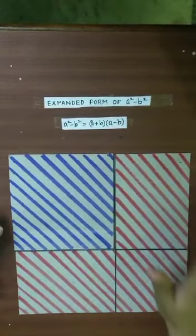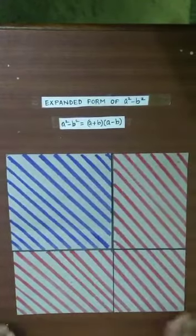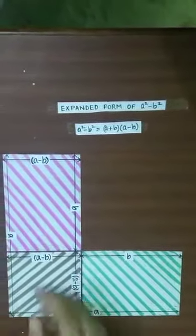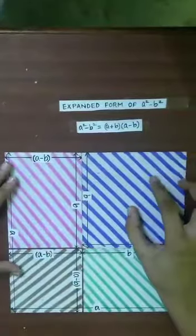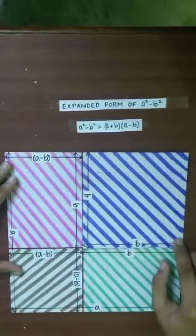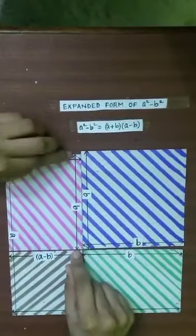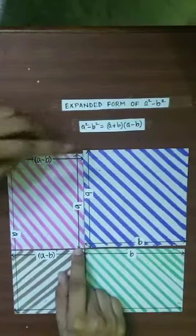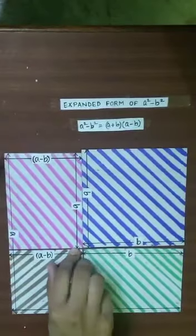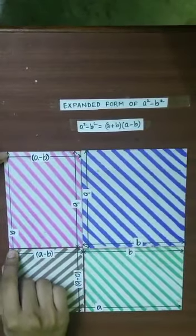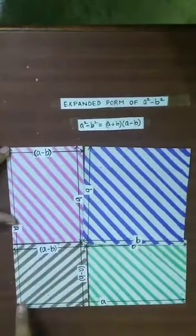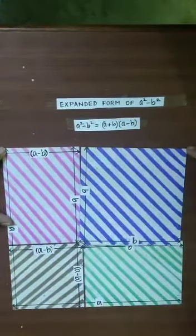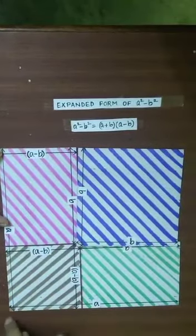So a²-b², that is this entire square minus this smaller square, is what (a+b)(a-b) is going to be. If we turn this, we know that this square is of length b. So this length from here to here is b. This entire length from here to here is a — from here to here it's a, here to here it's a, and here to here it's a.